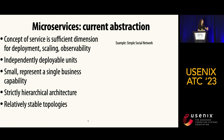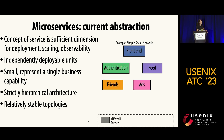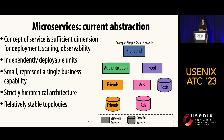I'll give an example of a social network application that abides by this abstraction. We have a front-end service and then a collection of stateless services: authentication, feeds, friends, and ads. We also have a set of databases — friends, ads, and posts.